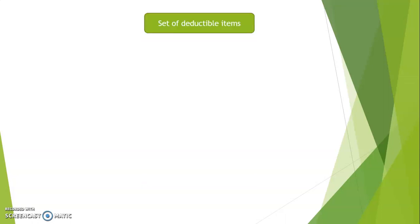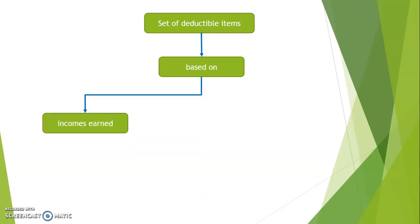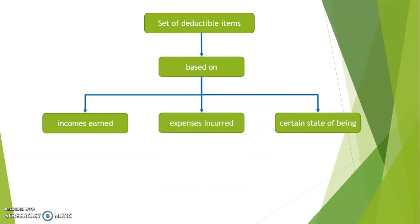I'll give you a quick overview of the items which can be deducted as per section 80C to 80U. It is a set of deductible items based on three things: first, income zone; second, expenses incurred; and finally, certain state of being. So deductions under 80C to 80U are items based on either certain incomes that we earn and can deduct, certain expenses that we have incurred, or a certain state of being that allows the assessee to make a deduction of a certain amount.